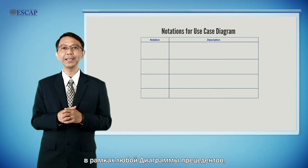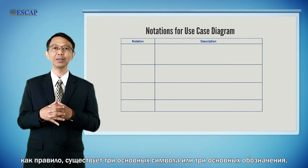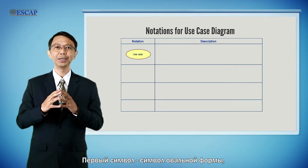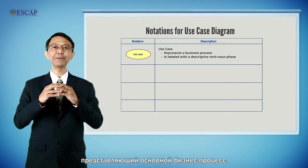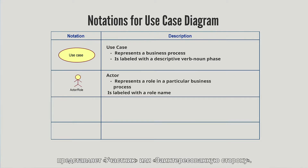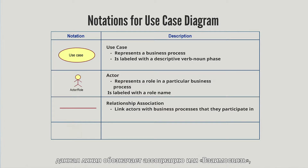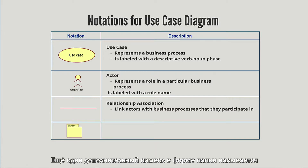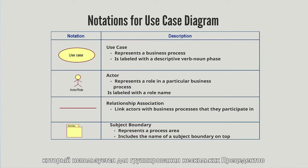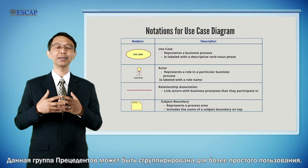Within any use case diagram, there are normally three main symbols used. The first is an oval-shaped symbol called a use case, representing a high-level business process. The second is a human-shape symbol representing an actor or stakeholder. The third is a straight line representing an association or relationship, normally connecting between an actor and a use case. One additional symbol with a folder shape is called a subject boundary, used to group a set of use cases together for easy reference.